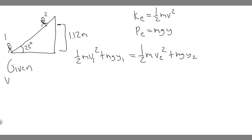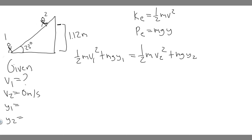Let's identify each variable. v1 is the initial speed — that's what we're solving for, so it's unknown. v2 is the velocity at maximum height, which is zero meters per second since the sled momentarily stops there. y1 is the starting height, which is zero meters. y2 is the final height, which is 1.12 meters.